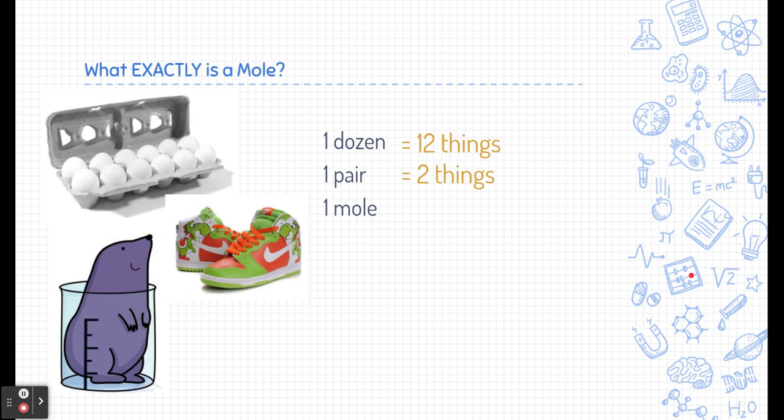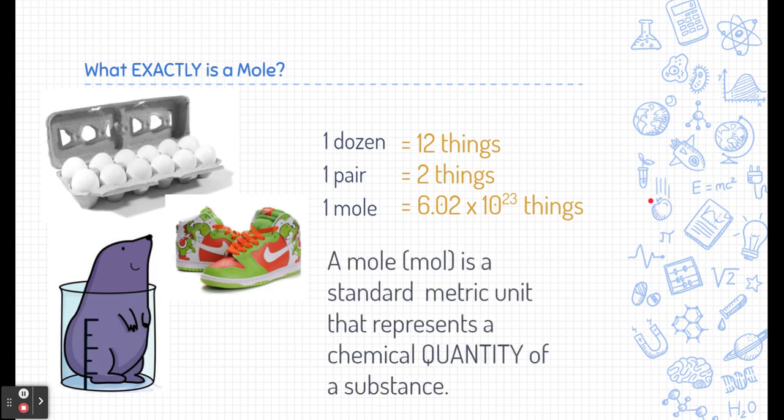What about a mole? You're probably not familiar with this, but a chemist is. One mole is equal to 6.02 times 10 to the 23 things — or in other words, 602 sextillion things. A mole is just a standard metric unit that represents a chemical package, or a quantity of any substance.